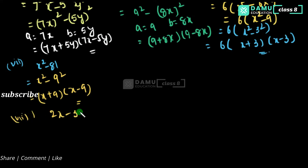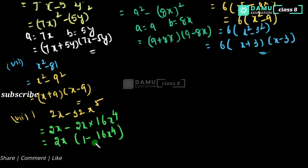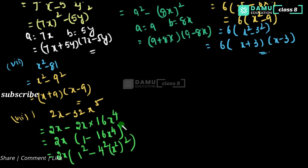The eighth one is 2x minus 32x to the power 5. We can take 2x as the common factor. So write 2x into 1 minus 16x to the power 4, since 32x⁵ equals 2x times 16x⁴. Now 1 minus 16x⁴ can be written as 1 squared minus 4x squared whole squared, since 16x⁴ equals 4x² whole squared.